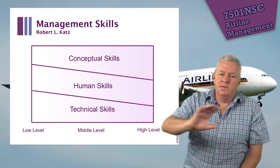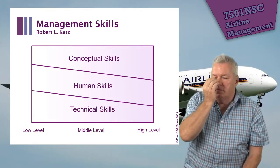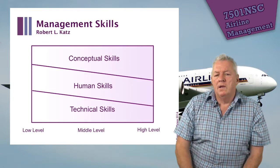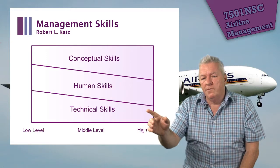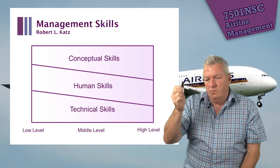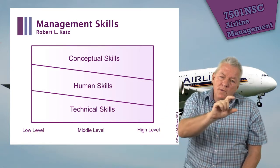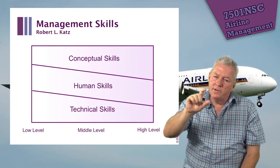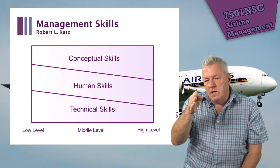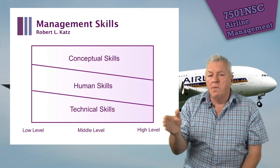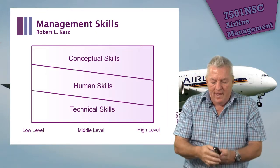Katz noted that at lower management levels, such as supervisory roles, a high level of technical skills is needed — for example, managing someone changing an aircraft engine. At the CEO level, well-developed conceptual skills become most critical, while technical skills matter less. What remains constant across all levels is the need for strong human skills. Building your conceptual skills to become a senior manager is a key goal of this course.